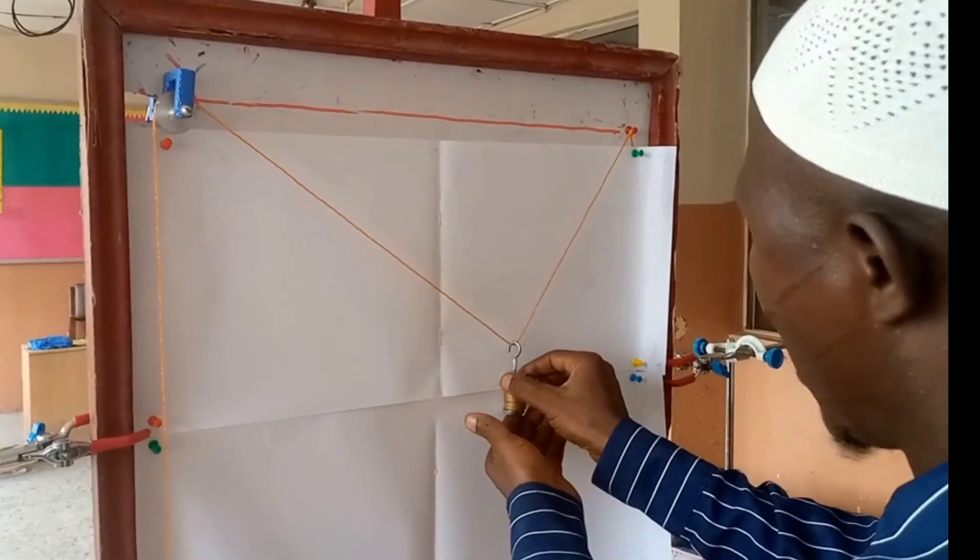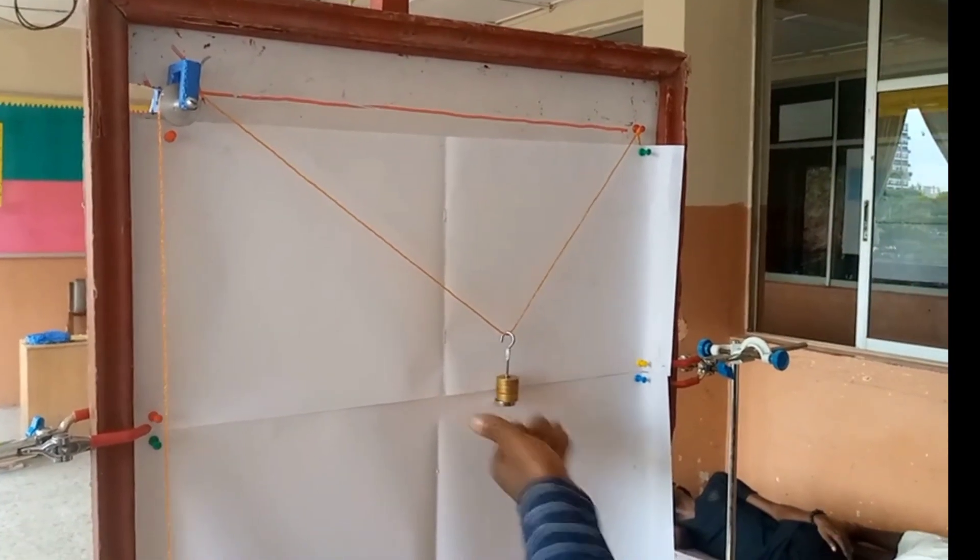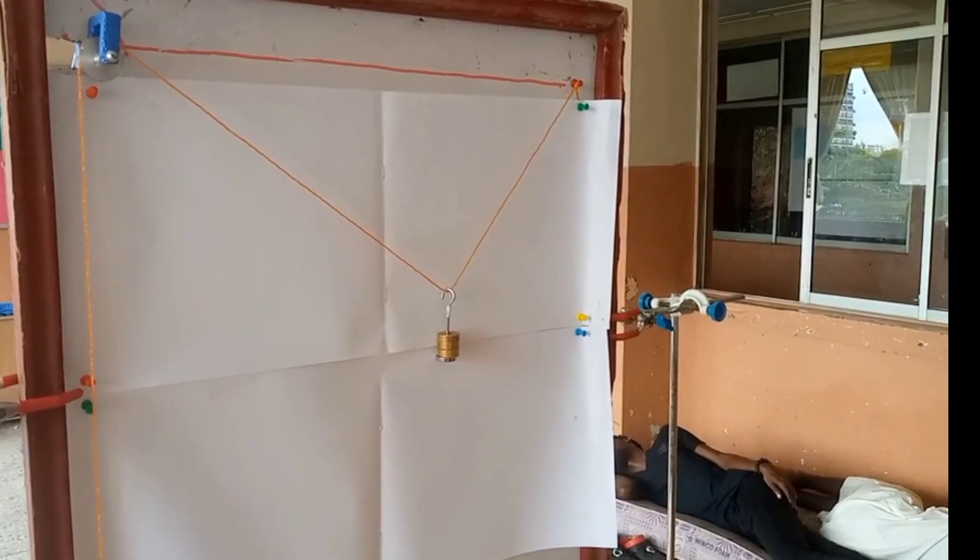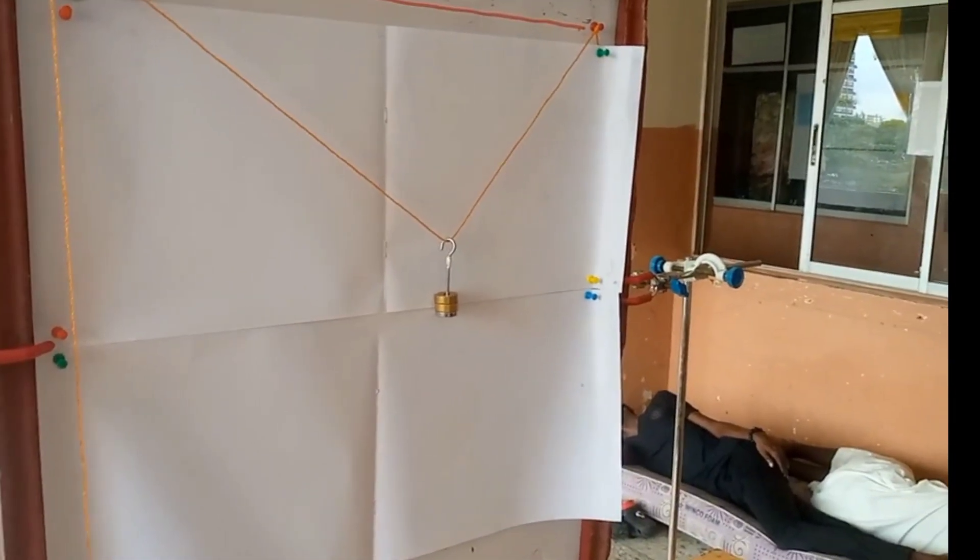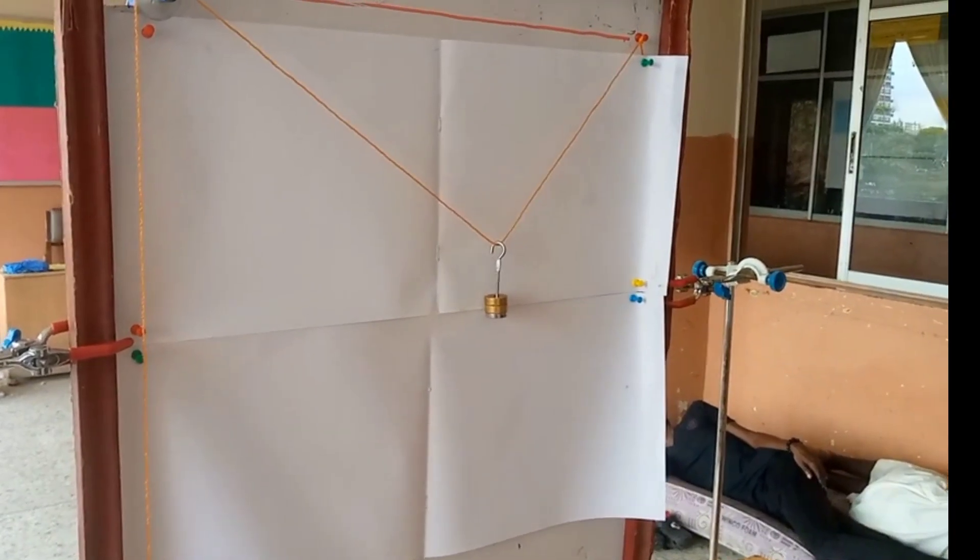They will ask you to remove one mass. Then you can see that it's going up. So remove it again. It's going up. So it depends on the nature of the question.